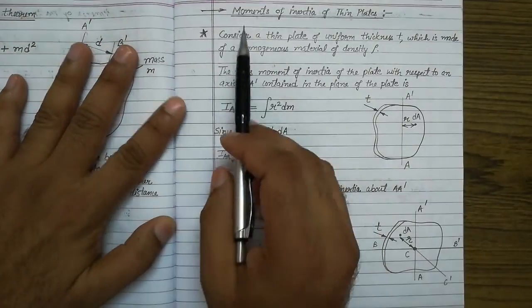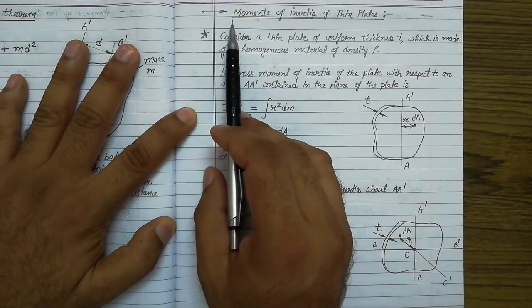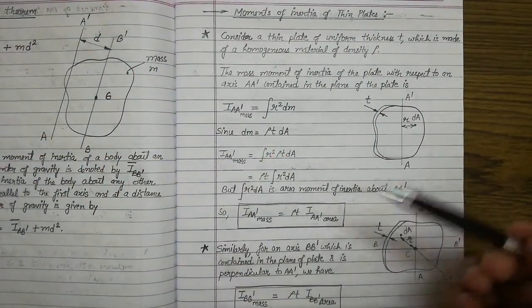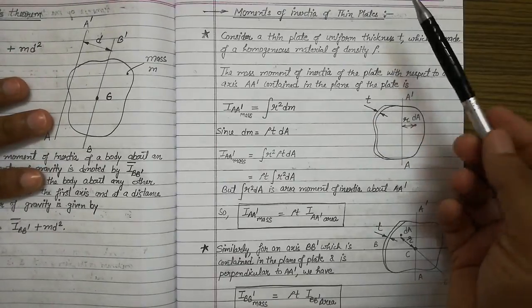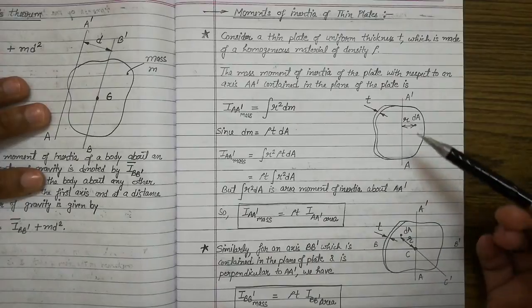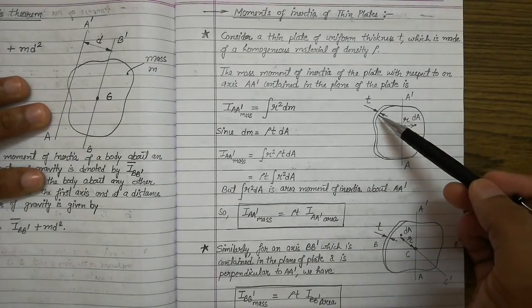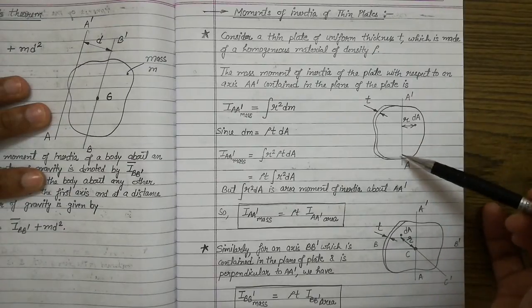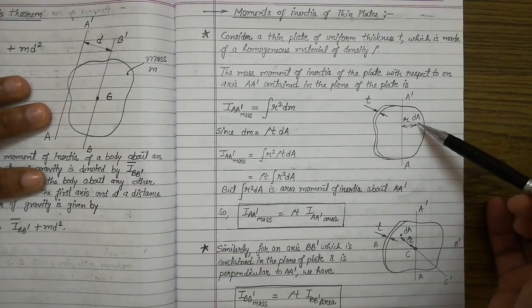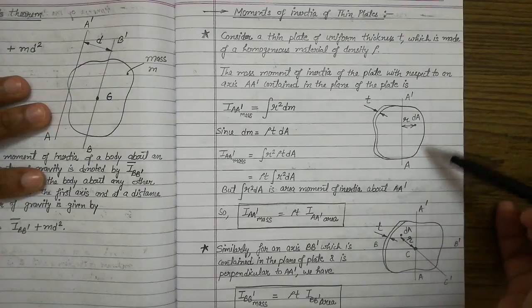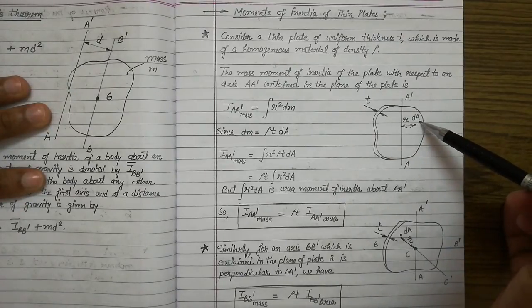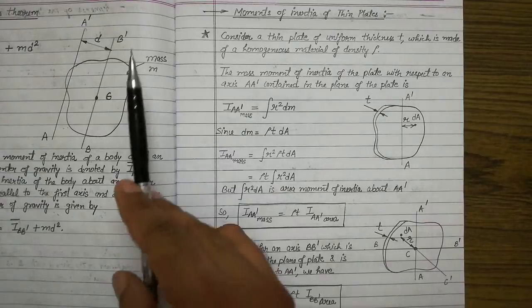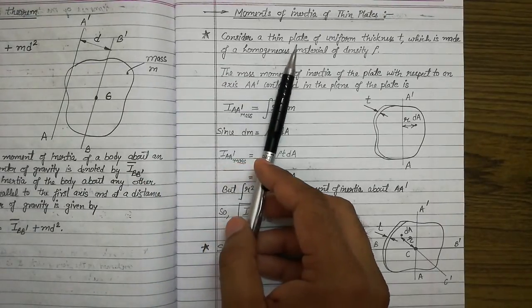Hello students, good morning. Today we will discuss the next topic of the mass moment of inertia chapter, that is moments of inertia of thin plates. In this topic we will learn how to find the mass moment of inertia of thin plates. We are taking one thin plate here and its thickness is shown as t. We want to find its moment of inertia about this vertical axis labeled as AA'.